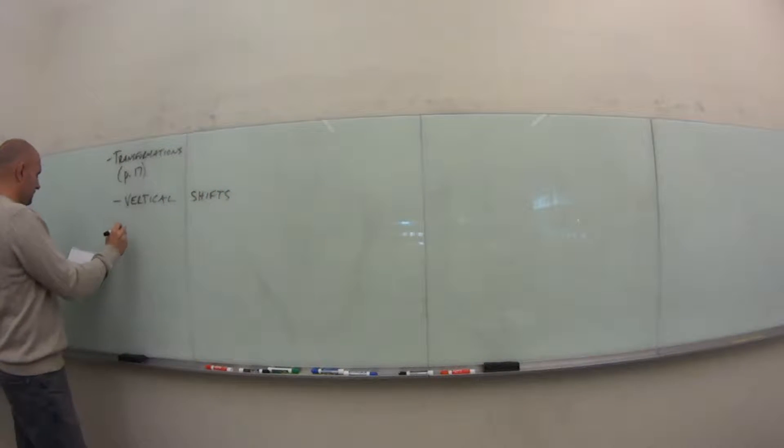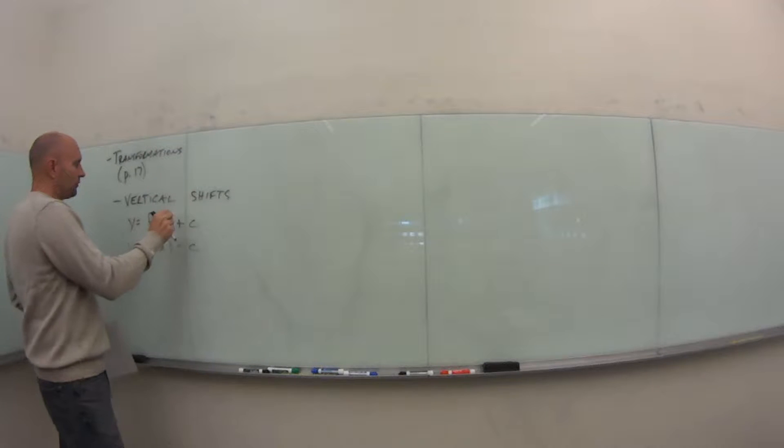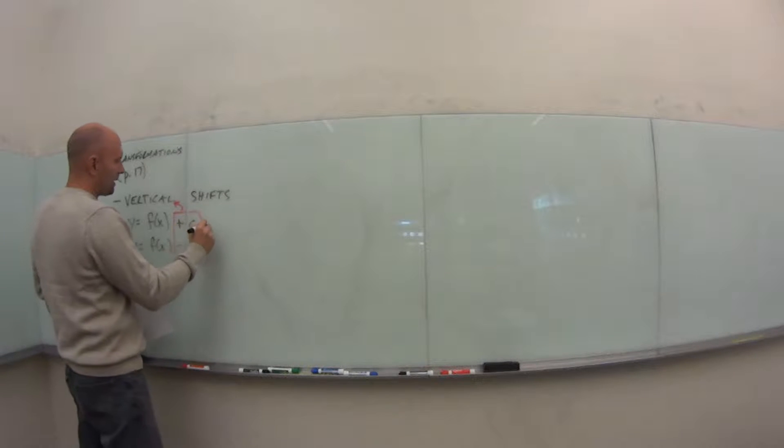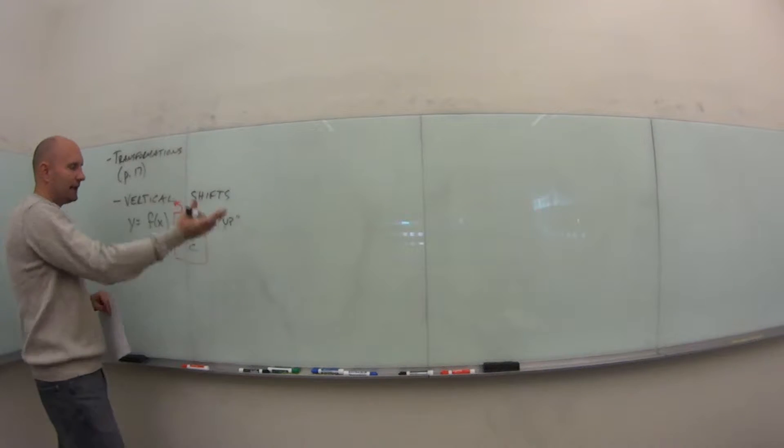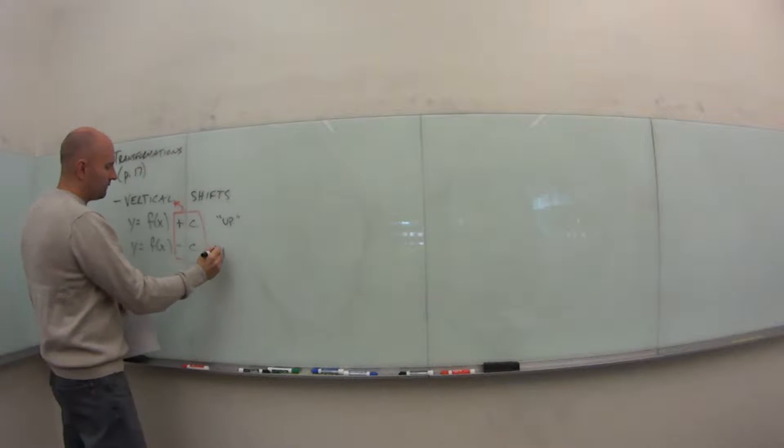So for vertical shifts, we're going to have y equals some function, let's say x squared plus a value c, or y equals some function minus some value c. Because this value c, the amount that we're shifting, is not included within the function, that's what tells us this is a vertical shift. When this value of c is positive, it's moving the entire function up on the graph, just sliding it up that many units. When this is negative, it's shifting it down this many units.